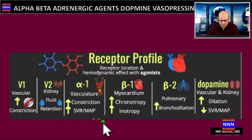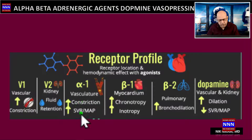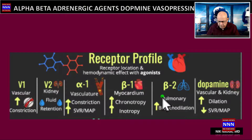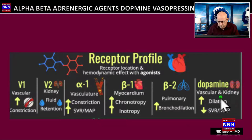To summarize: alpha-1 acts predominantly on blood vessels, causing vasoconstriction and increasing systemic vascular resistance and mean arterial pressure. Beta-1 acts on the myocardium, increasing chronotropy and inotropy, whereas beta blockers do the reverse. Beta-2 acts on the pulmonary vasculature and alveolar cells to cause bronchodilatation. Dopamine dilates renal arteries at lower doses up to 5 micrograms, then later increases systemic vascular resistance.